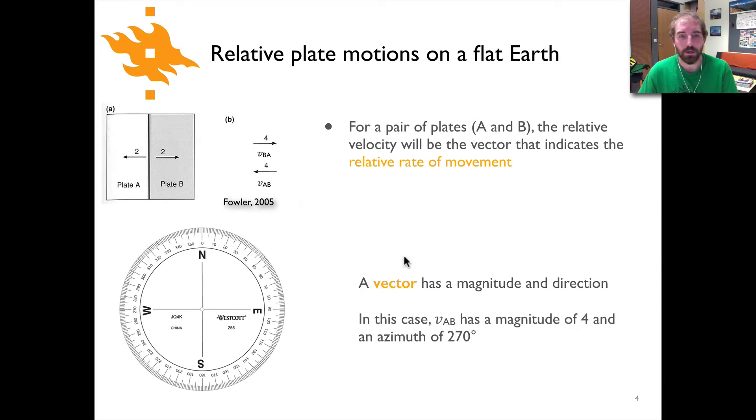Now these velocity vectors aren't simply arrows—they are vectors, meaning that they have both a magnitude or length and a direction. In this case, if we look at the vector VAB, we can see that it has a magnitude of four—that's the length of the vector—and it's oriented at 270 degrees on a compass, so pointing straight to the left on the slide as we're looking at it, or west on this compass.